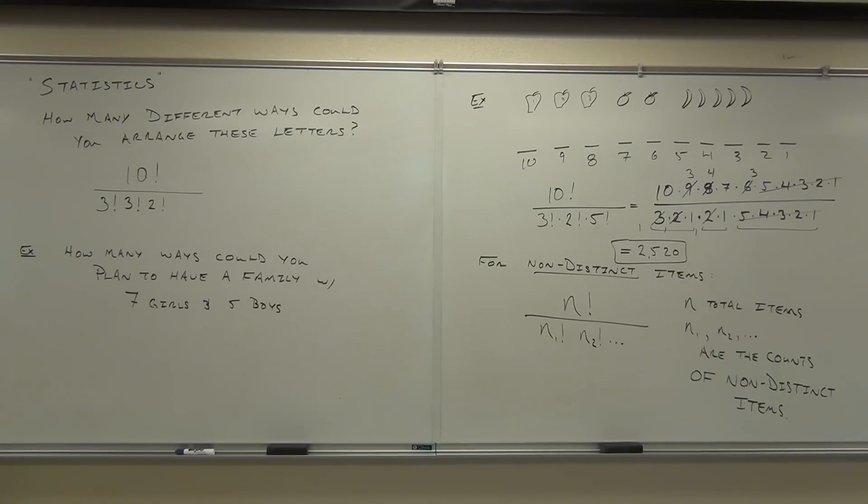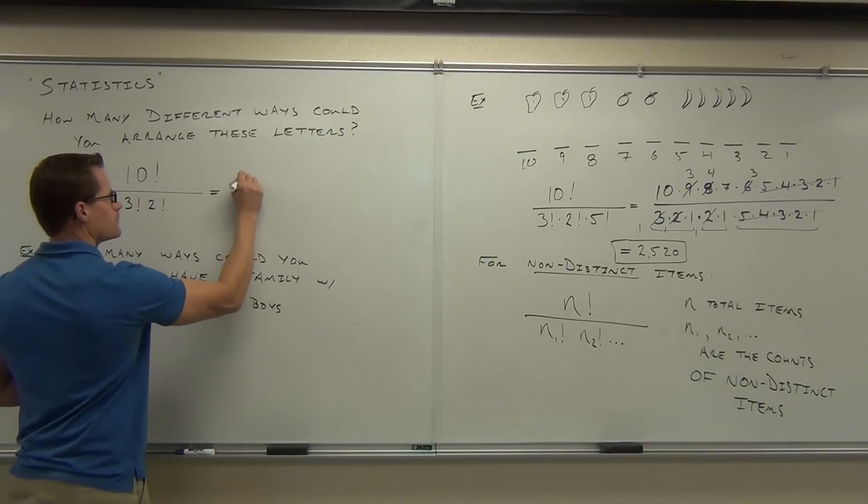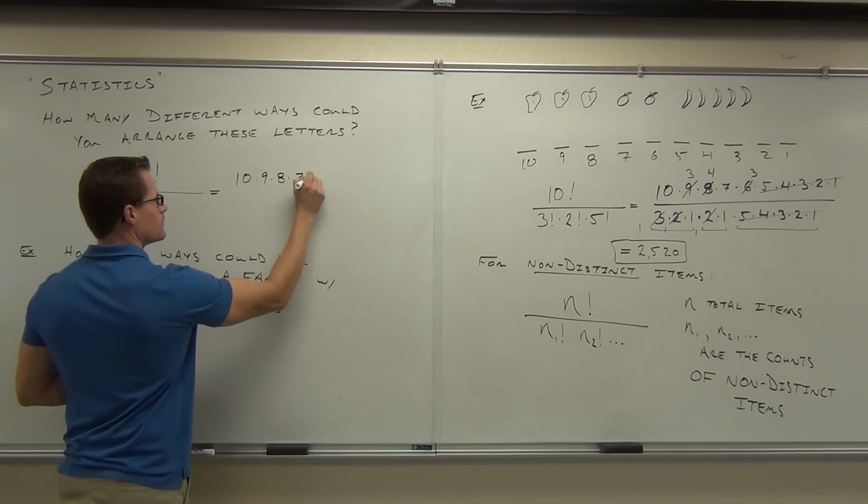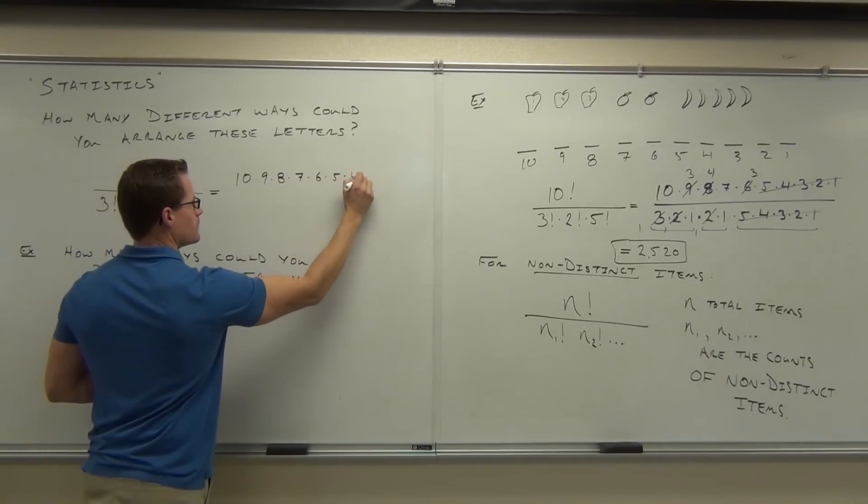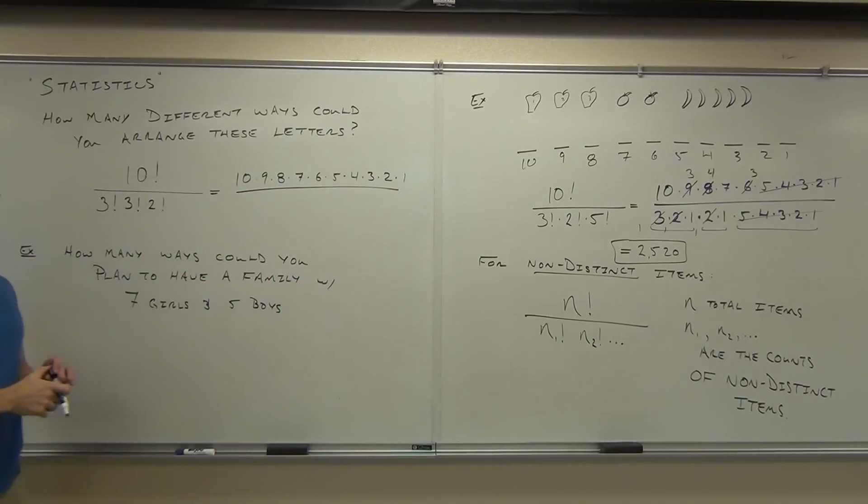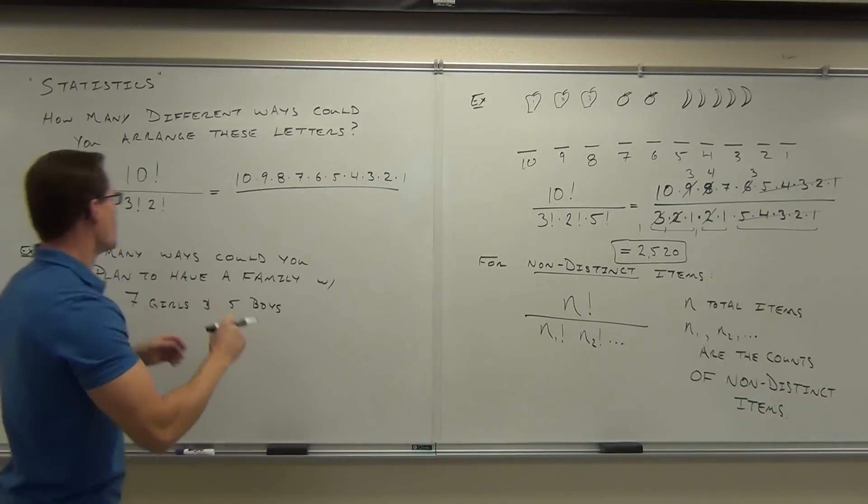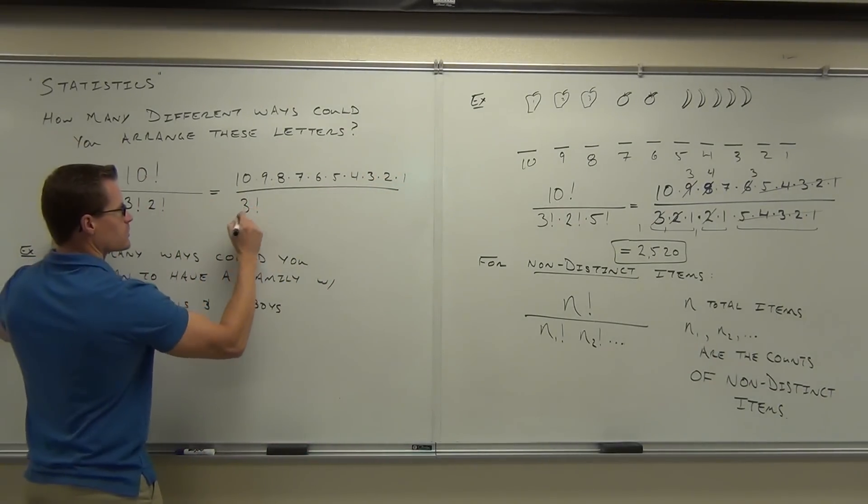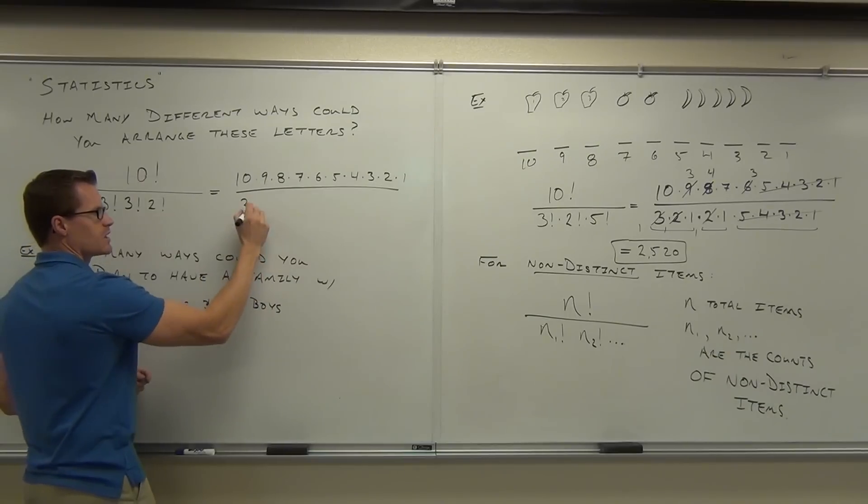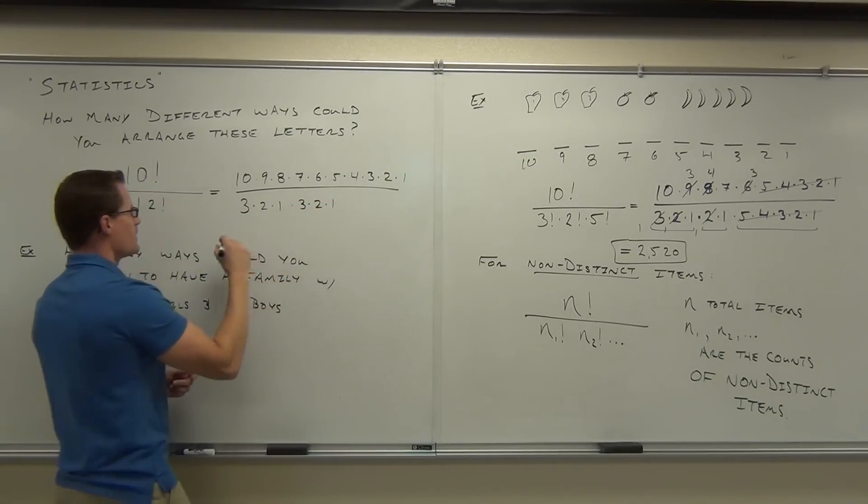Lots of good work so far. So we do have to write out the 10 times 9 times 8. We have to write out the factorial because we're now simplifying our fractions. So on our fractions, we have our 3 factorial, which in this case becomes 3 times 2 times 1. We have another 3 factorial and then we have another 3 factorial.